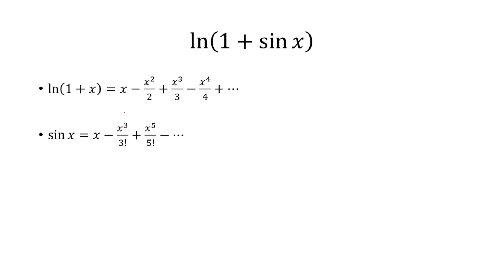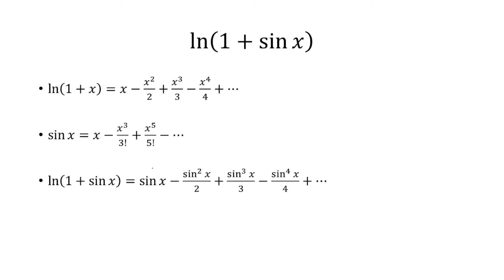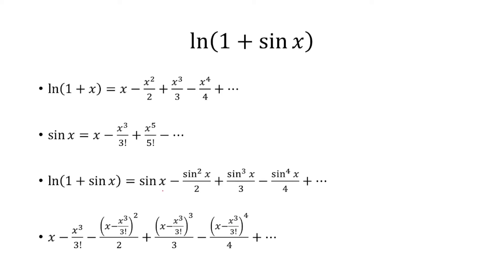Now we'll use a shortcut with two known facts. We use the series ln(1 + x) = x minus x squared over 2 plus x cubed over 3 minus x to the fourth over 4, stopping at the fourth degree since we want a fourth degree answer. For ln(1 + sin x), we substitute x = sin x, and then replace sin x with its series x minus x cubed over 6, stopping before x to the fifth.